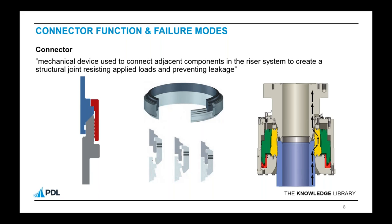When talking about connectors and failure modes, there are obviously lots of different failure modes that can occur. Today we're going to focus on the ultimate collapse modes — typically excessive yielding, deformation, or sudden disengagement of threads. We'll also look at some functionality around leakage and sealing, but we aren't going to cover fracture mechanics or fatigue failure, as there isn't time to cover those in the required detail.